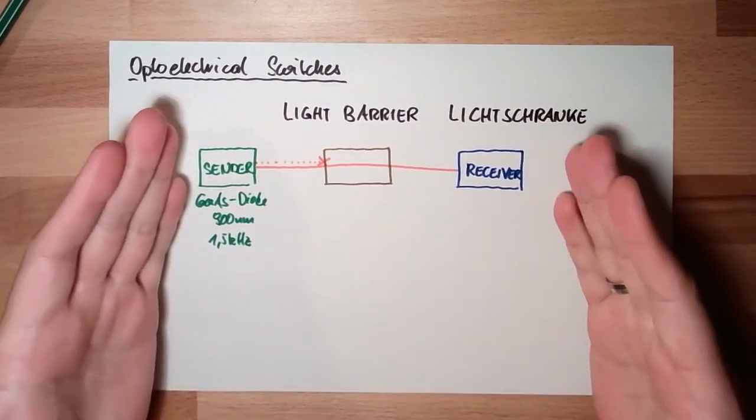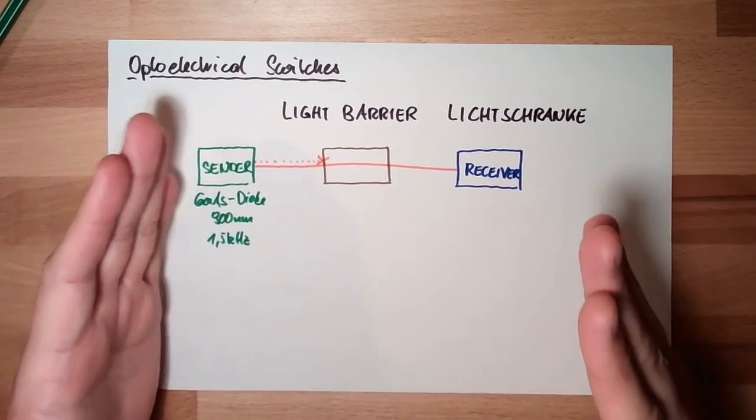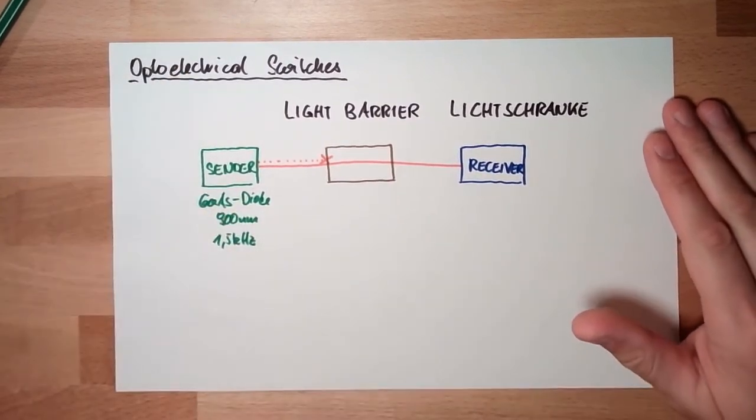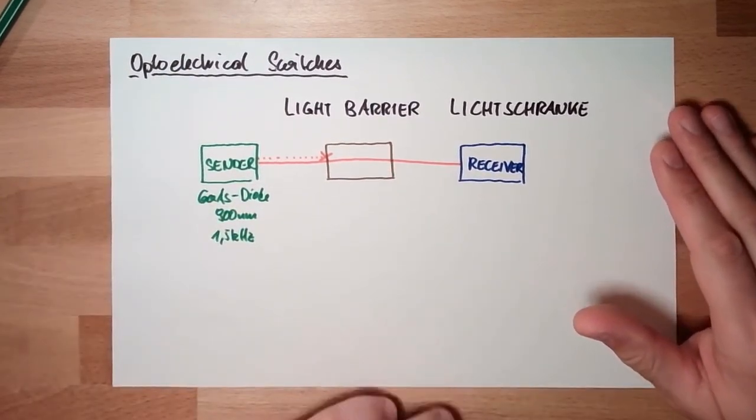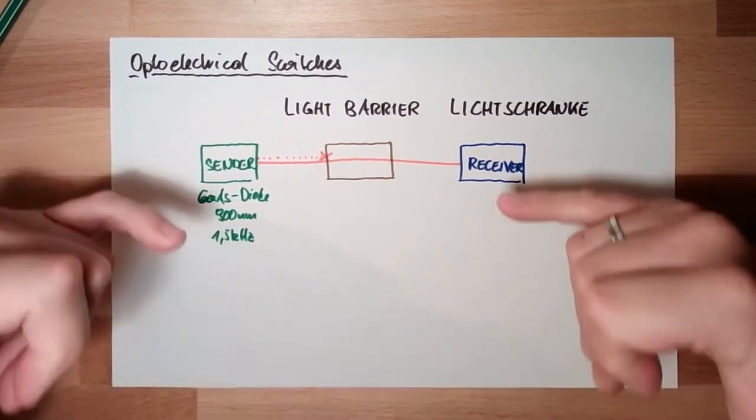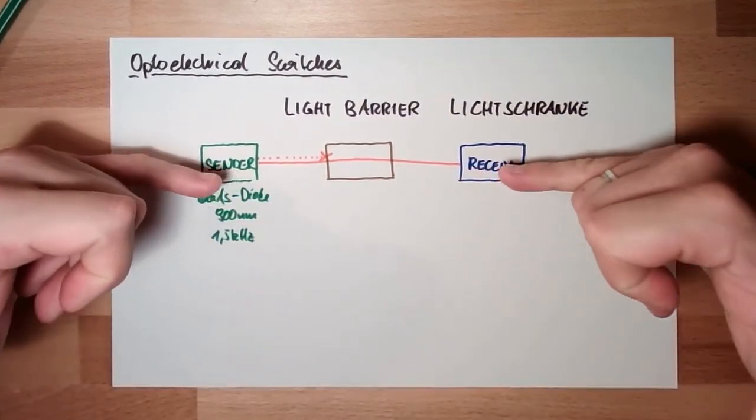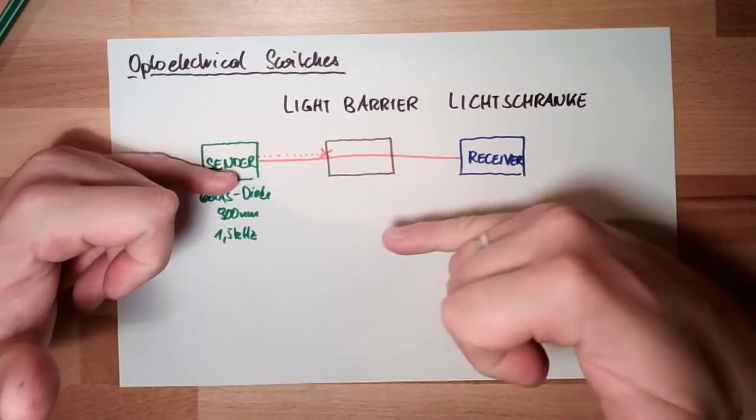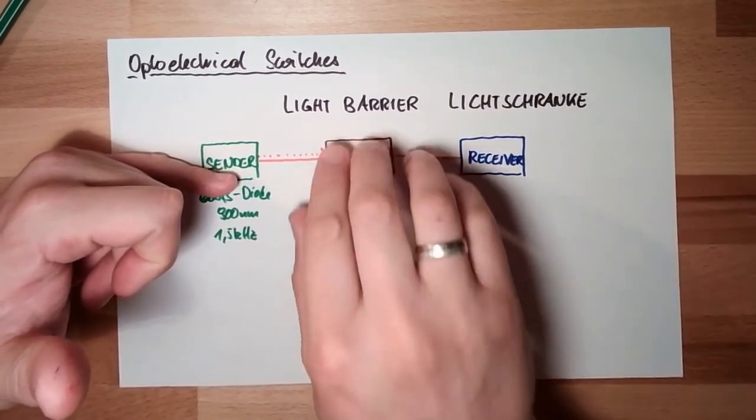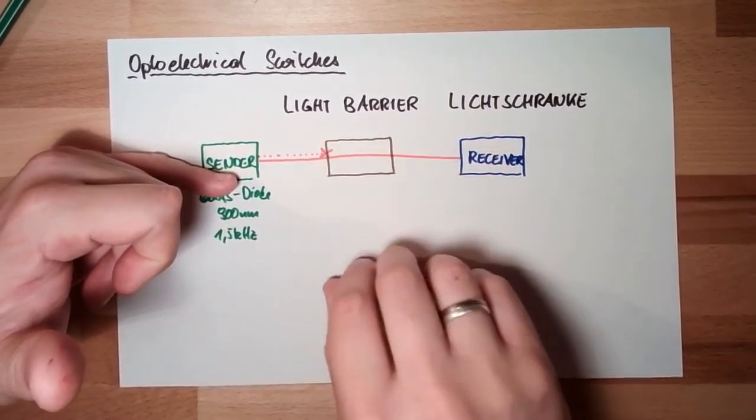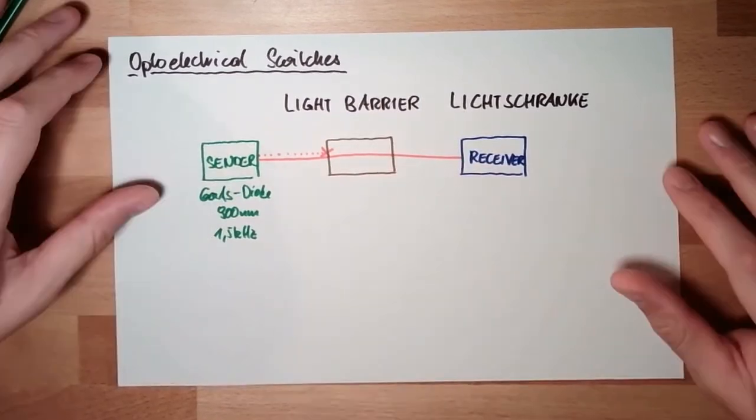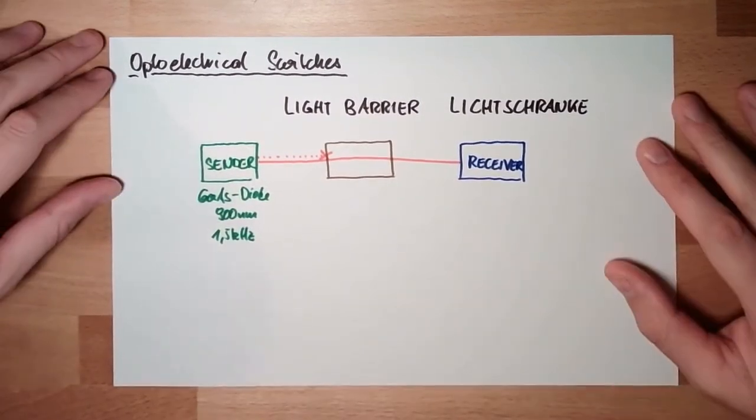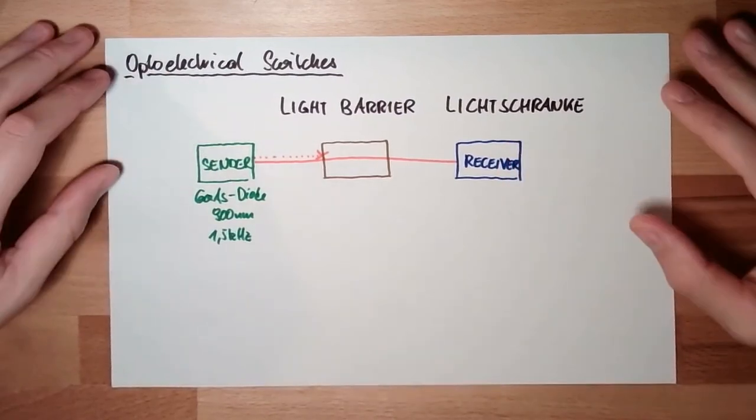That's one possibility. Maybe you know this from the conveyor belt at the supermarket. There's a conveyor belt. There is a light barrier at the end. If nothing is on, the conveyor belt is moving. If something is between, then the first product has reached the person, then it will stop. Light barrier.